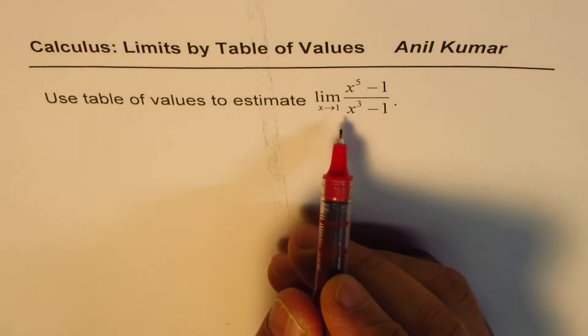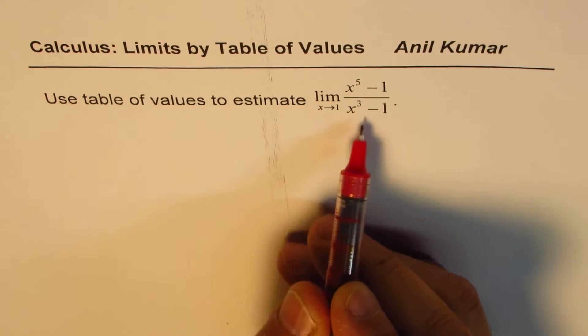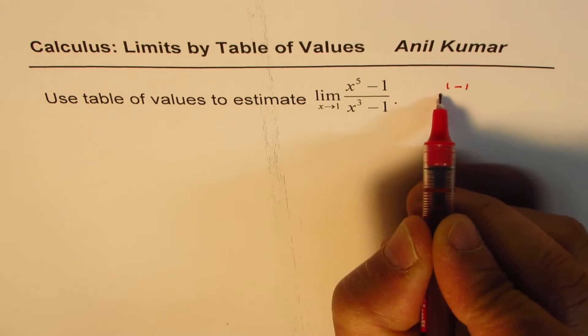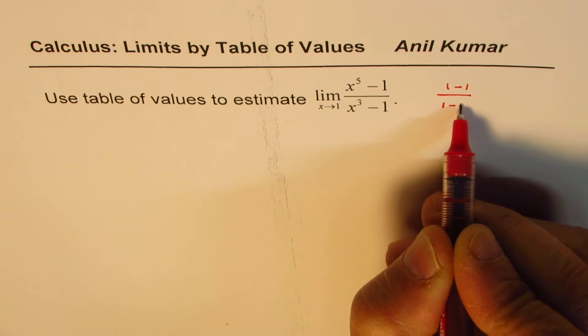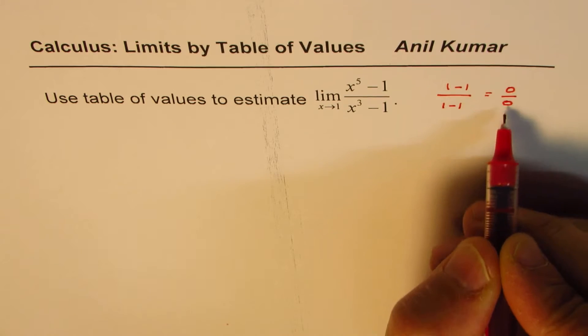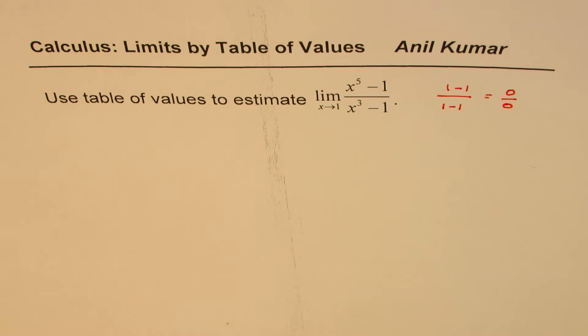Now in such a question, if you substitute 1, you get 1 minus 1 divided by 1 minus 1. So it is of the form 0 over 0. Now 0 over 0 is not really defined. But the good part here is,